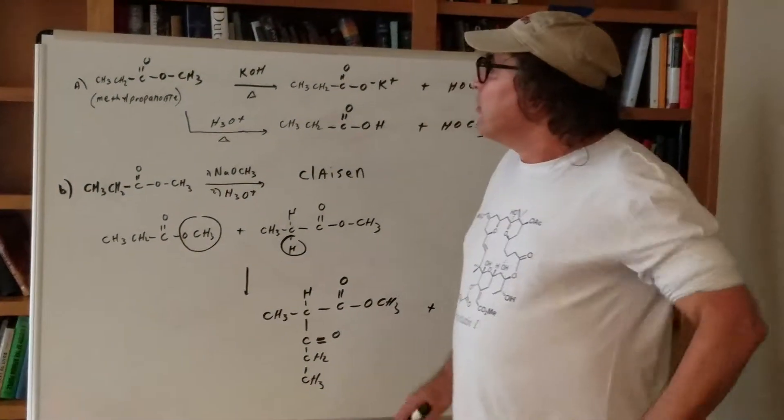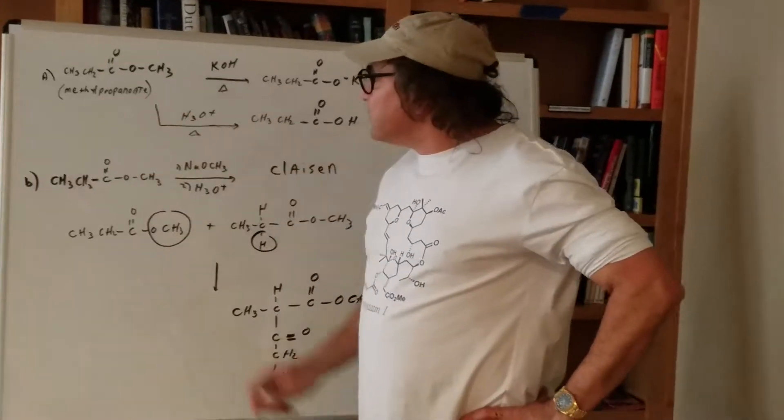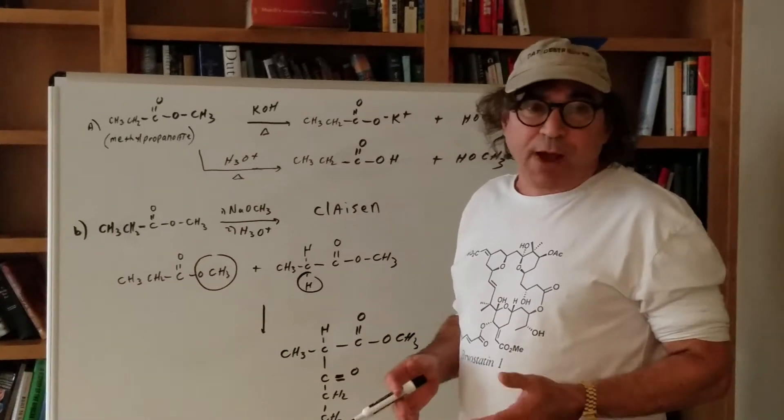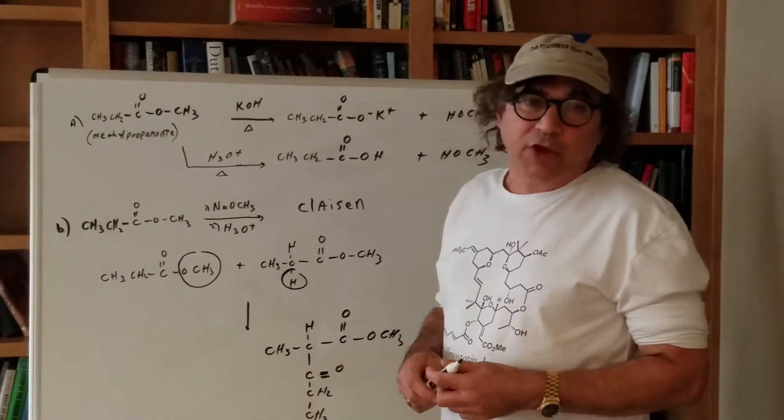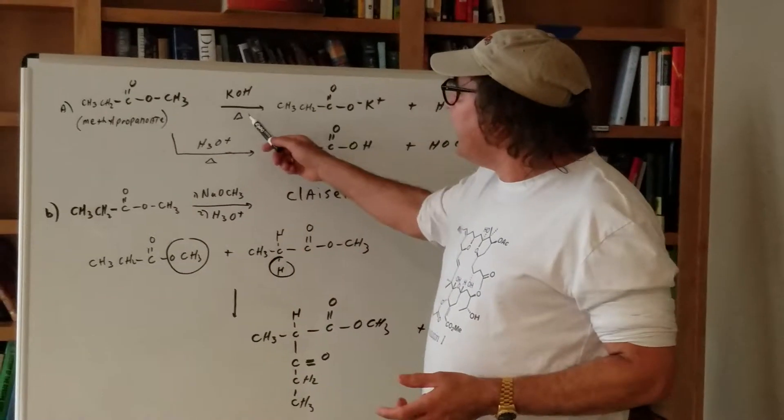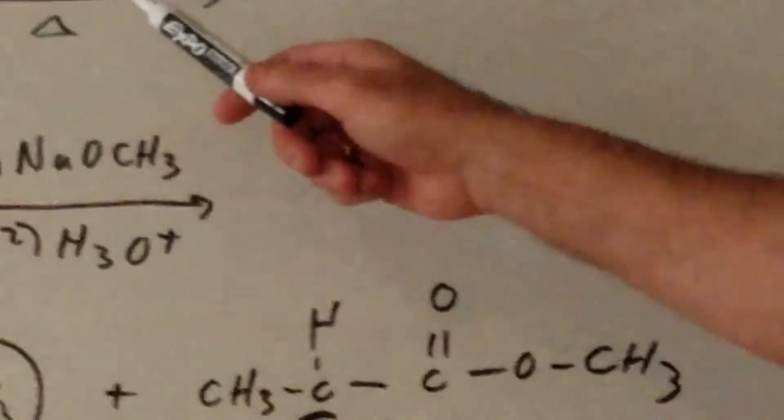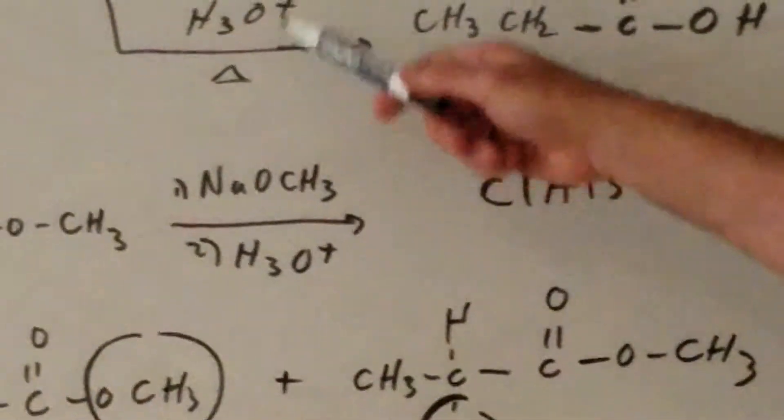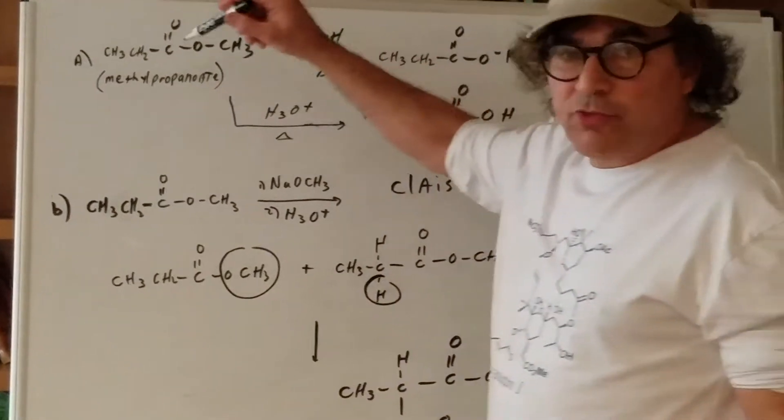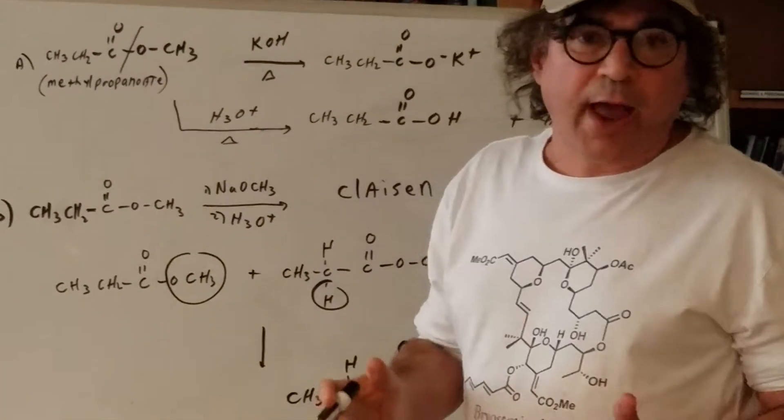I want you to look on the blackboard at what I have. I have an ester called methylpropanoate. That in itself is a very important problem, so make sure you go over the nomenclature on how to name an ester. What I'm going to do is take this ester and heat it up with potassium hydroxide, or I can do the same thing under acidic conditions and heat it under hot acid. Either way, what I want you to remember is you're going to cut the ester down the middle and hydrolyze it.